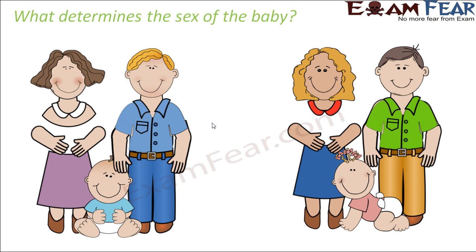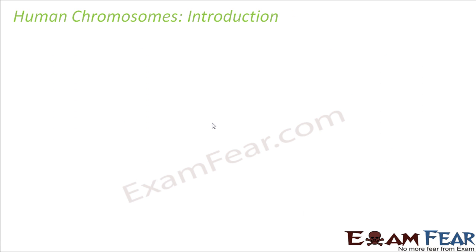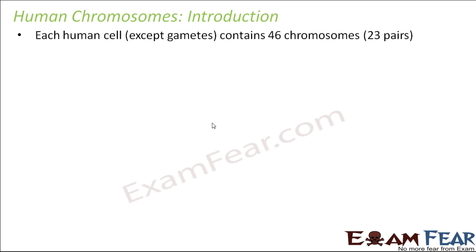There is a 50-50 chance that the baby can be a boy or a girl. But what exactly decides that? In order to understand that, we will have to understand a few concepts first. So we have to be clear about the concept of human chromosomes. Now all of us have learned about cells — that our body is made up of several cells. Human beings are multicellular organisms.